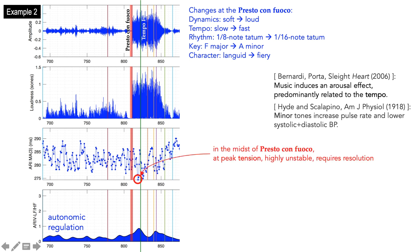The lowest ARI is in the midst of the Presto Confuoco. At this point, the dynamics peak, the tension peaks, the harmony is highly unstable. Thus, the unsurprising stress response.